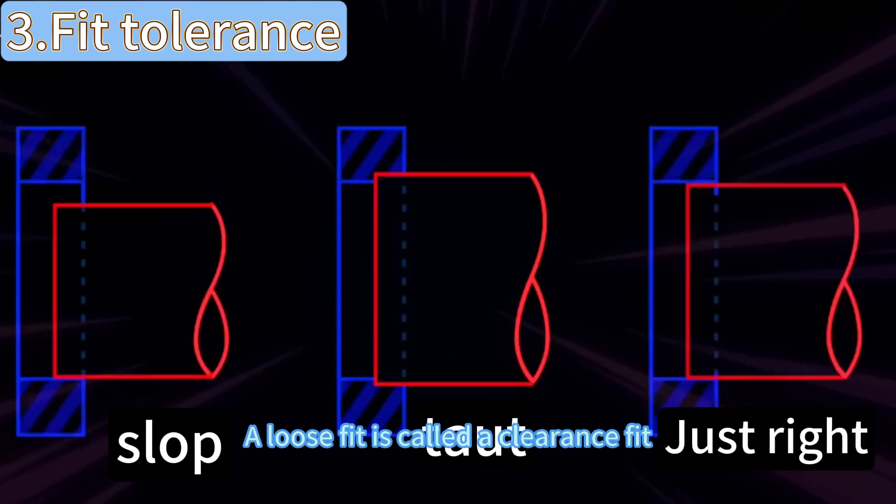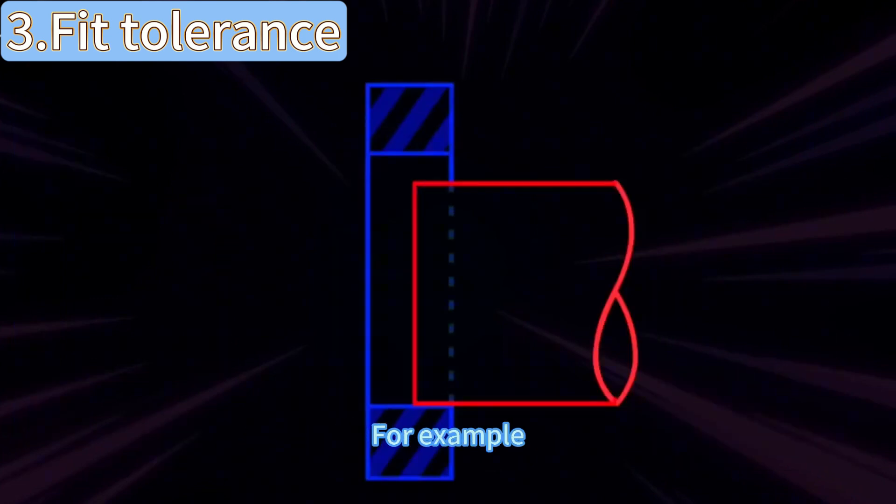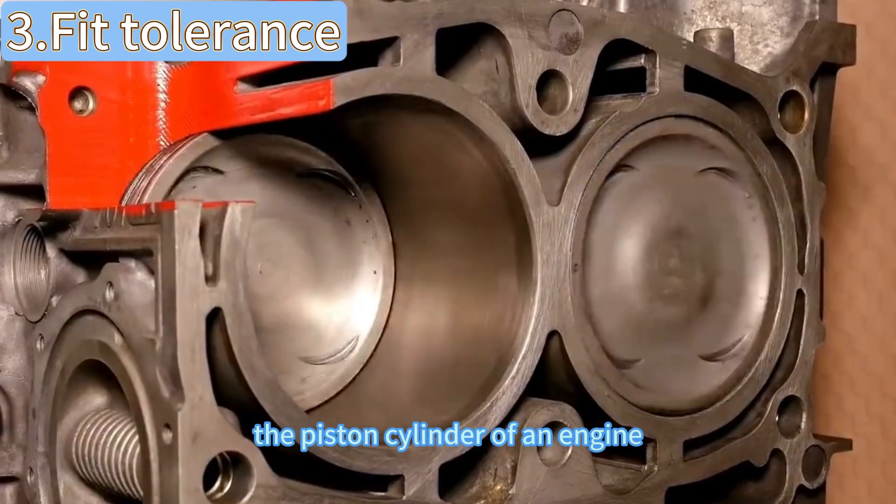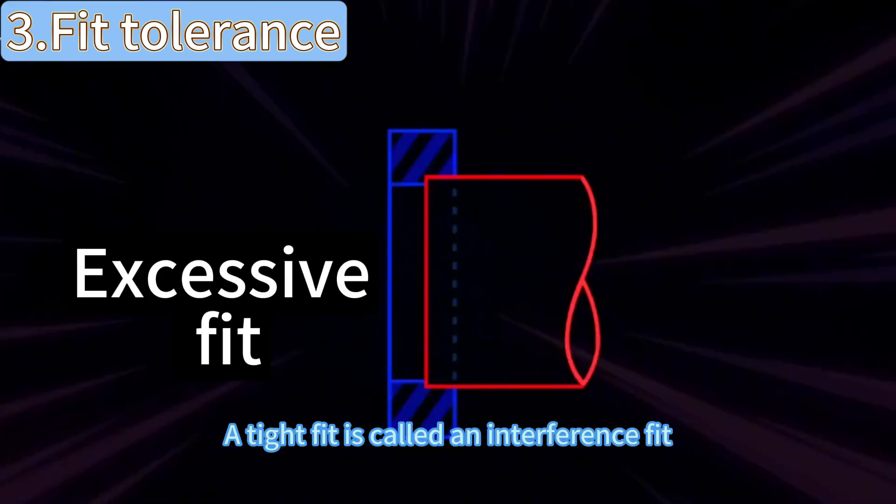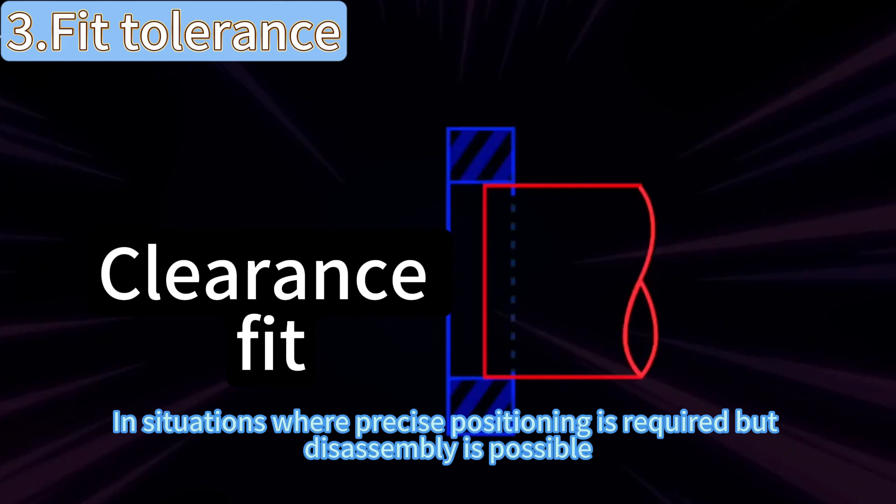It's very loose, tight, or just right. A loose fit is called a clearance fit, for example piston cylinder of an engine. A tight fit is called an interference fit, and a good fit is called overfit.